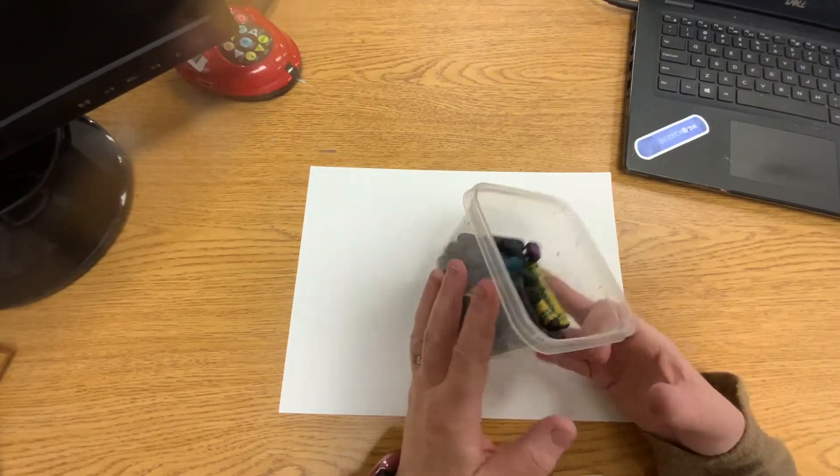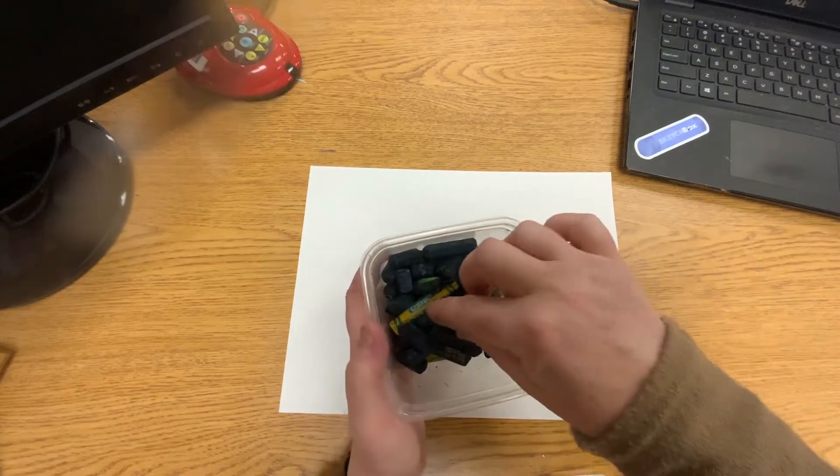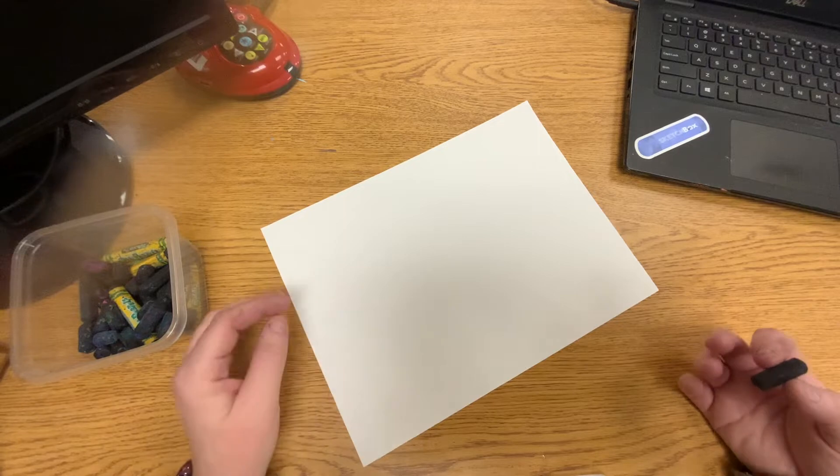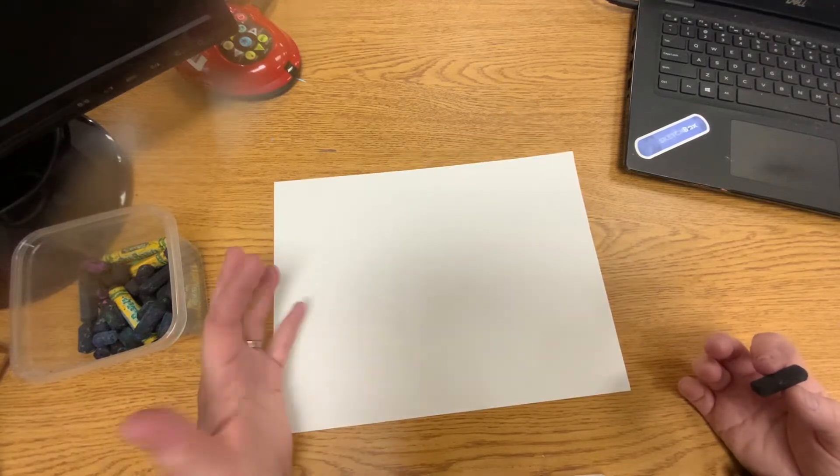You're going to need something that's oil-based. The thing that is oil-based is going to be an oil pastel. Now you can draw any of the birds from the story from Ashley Bryant, Beautiful Blackbird.